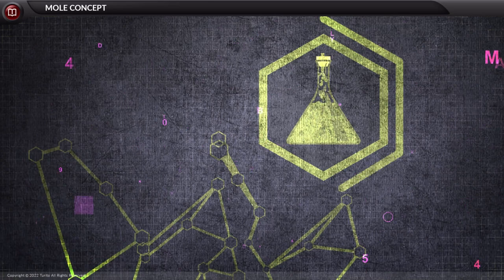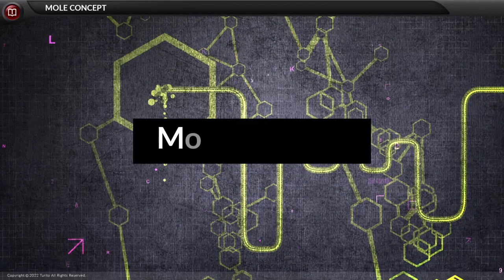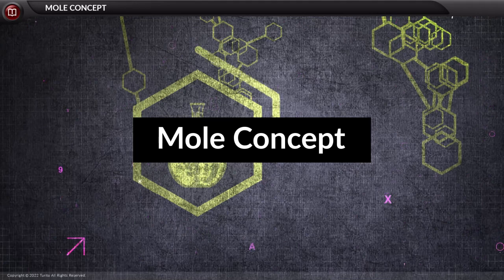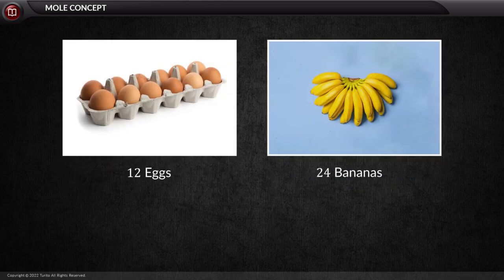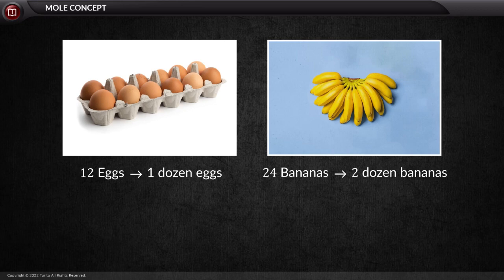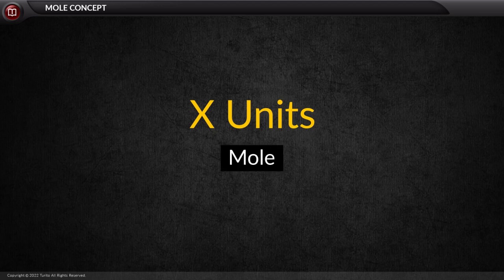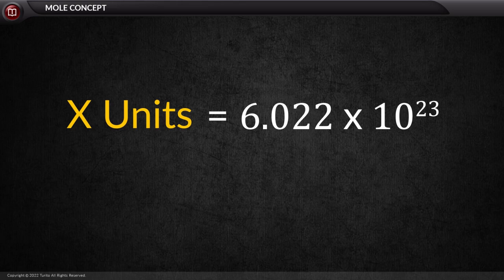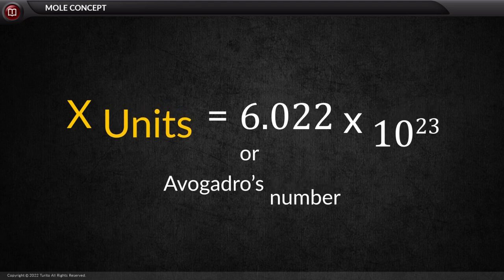When we study chemistry, we come across many concepts. One of the basic concepts is the mole concept. To understand it, we first need to understand what a mole is. For example, 12 eggs and 24 bananas can be expressed as one dozen eggs and two dozen bananas — 12 units equals one dozen. Similarly, in chemistry, a certain number of units is given the name 'mole.' This number is equal to 6.022 × 10²³, known as Avogadro's number. Because this is a huge number, the mole concept was introduced to facilitate calculations.